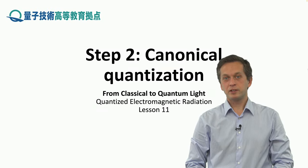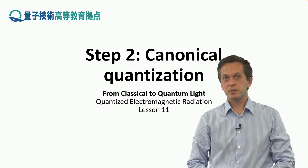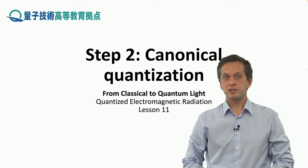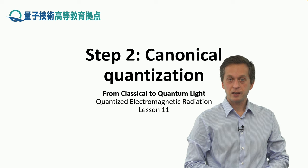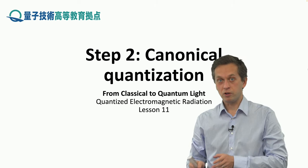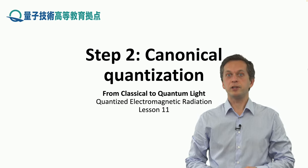Step 2: Canonical quantization. Let's begin to describe the general procedure of how to go from a description of a physical system using classical mechanics to describing it using quantum mechanics, known as the canonical quantization.